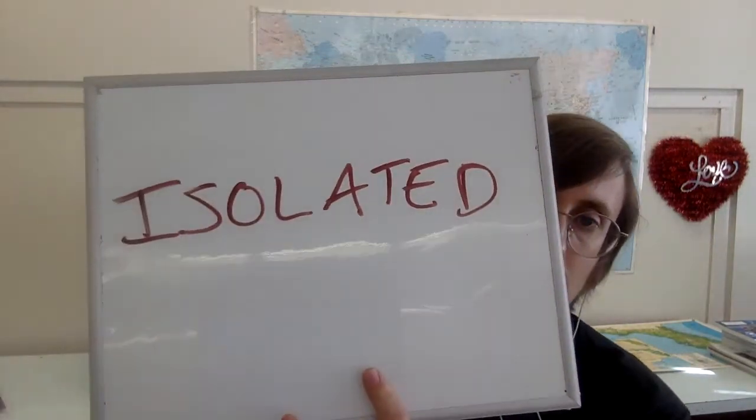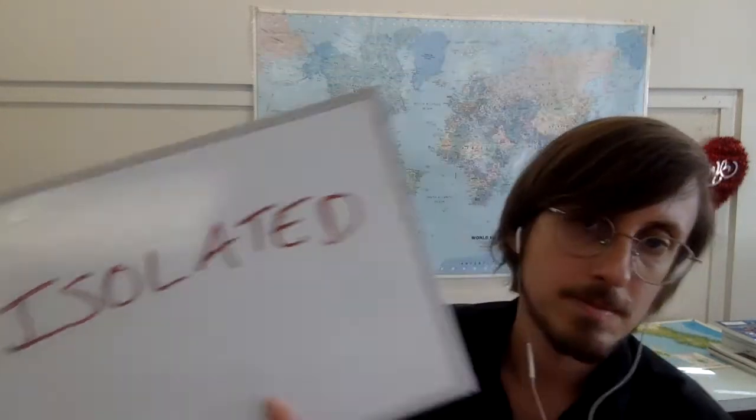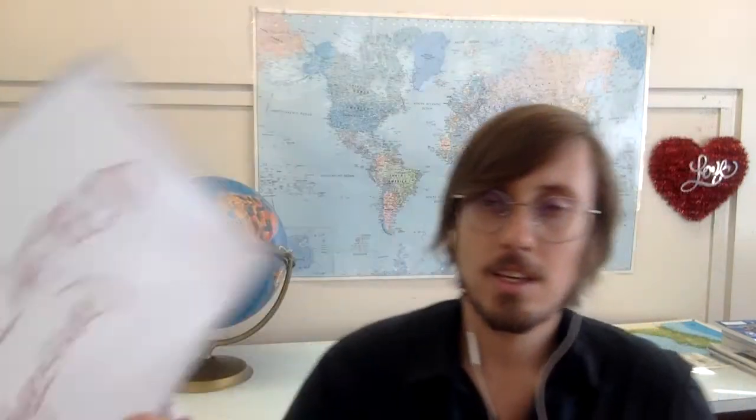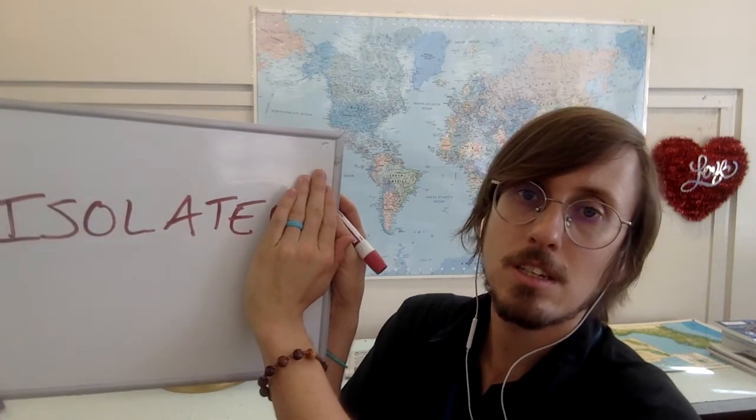Next word: isolated. Isolated. I-S-O-L-A-T-E-D. Isolated. This is the adjective form of this word — a description. We do have a verb: isolate. If you take off the D, isolate. To isolate is to be alone, to leave a place where you are with others and then to be alone.